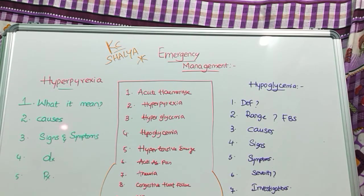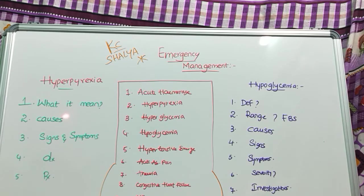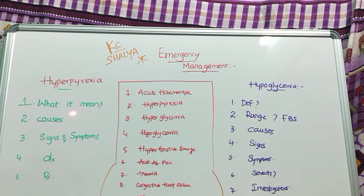The causes of hyperpyrexia are: sepsis, intracranial hemorrhage, severe viral infections, bacterial infections, fungal infections, and encephalitis. In general, any inflammatory conditions also result in a local rise of temperature, and in severe cases this also leads to hyperpyrexia.